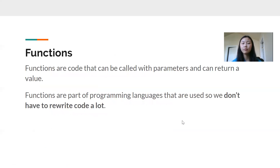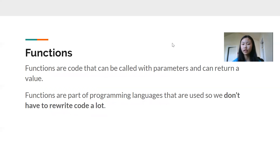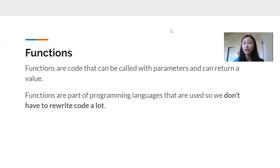Now we're going to look at some basic definitions and structures of functions, just as an introduction. Functions are code that can be called with parameters and can return a value. We use functions so that we don't have to rewrite code repeatedly — if there's code we want to execute multiple times, without functions we'd have to rewrite it every single time. With functions, we can just call the function whenever we need that code and it saves a lot of space.